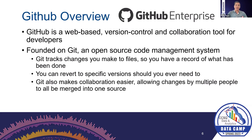For those of you who are not familiar, GitHub is a web-based version control and collaboration tool for developers, and the entire product is founded on the premise of Git, which is an open source code management system. With Git, it allows you to track changes that you make to files so that you have records of all the changes to your code and your repo over time. That also allows you to revert to specific versions of files, should you ever need to, if there was a bug or changes in direction with features and functionality.